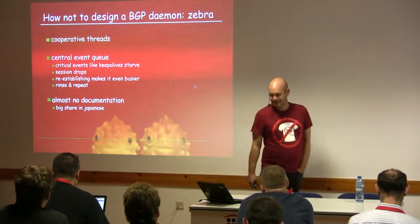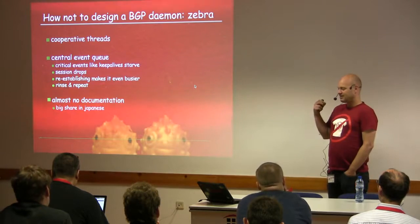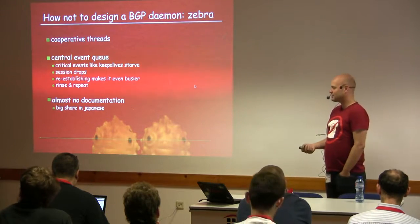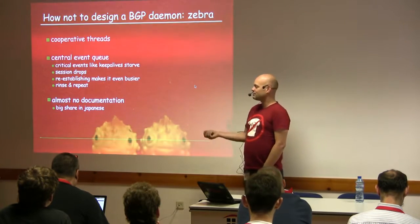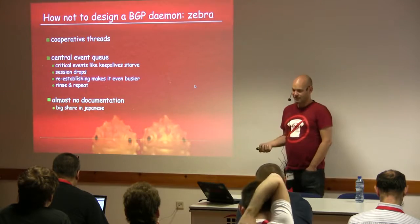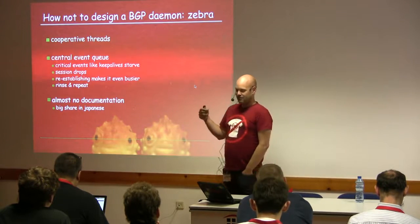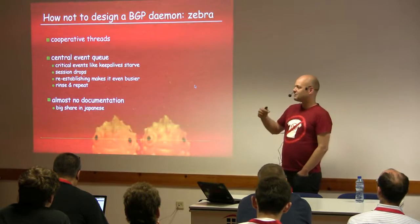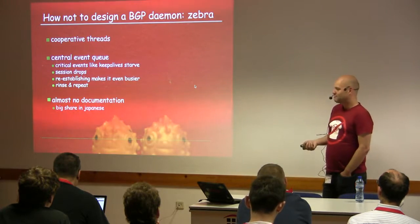Second mistake is cooperative threads. They have a central event queue, which means everything that's supposed to happen goes into the queue. There are critical events like keepalives you have to send to your peer so he doesn't think you died. If those don't arrive in time, the peer will drop the connection and routes — losing routes is bad. In the worst case, you're offline. When we figure out we have to send the keepalive and the session is already gone, it gets reestablished, generating another flood of events making the problem worse.